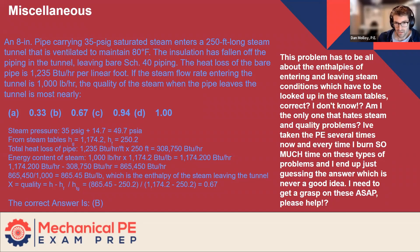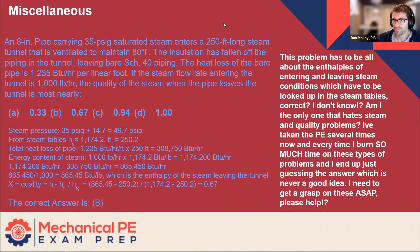If the steam flow rate entering the tunnel is 1,000 pounds per hour, the quality of the steam when the pipe leaves the tunnel is most nearly what? And we have some notes here from the solution, which we can refer to, but let's try to frame out this problem as best we can. We'll do some annotation. So we have this pipe underground.